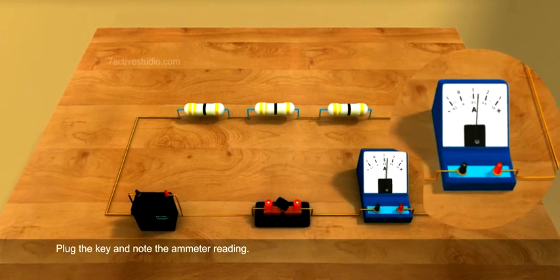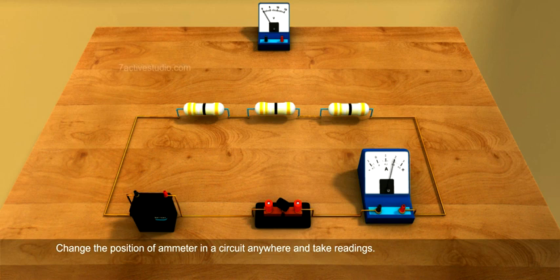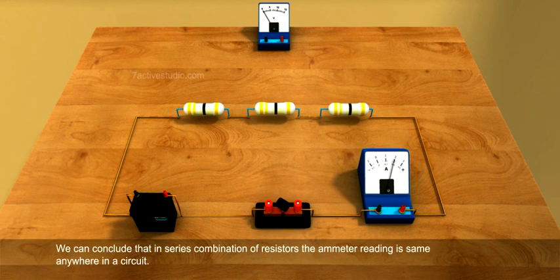Plug the key and note the ammeter reading. Change the position of ammeter in the circuit anywhere and take readings. We can conclude that in series combination of resistors, the ammeter reading is the same anywhere in the circuit.